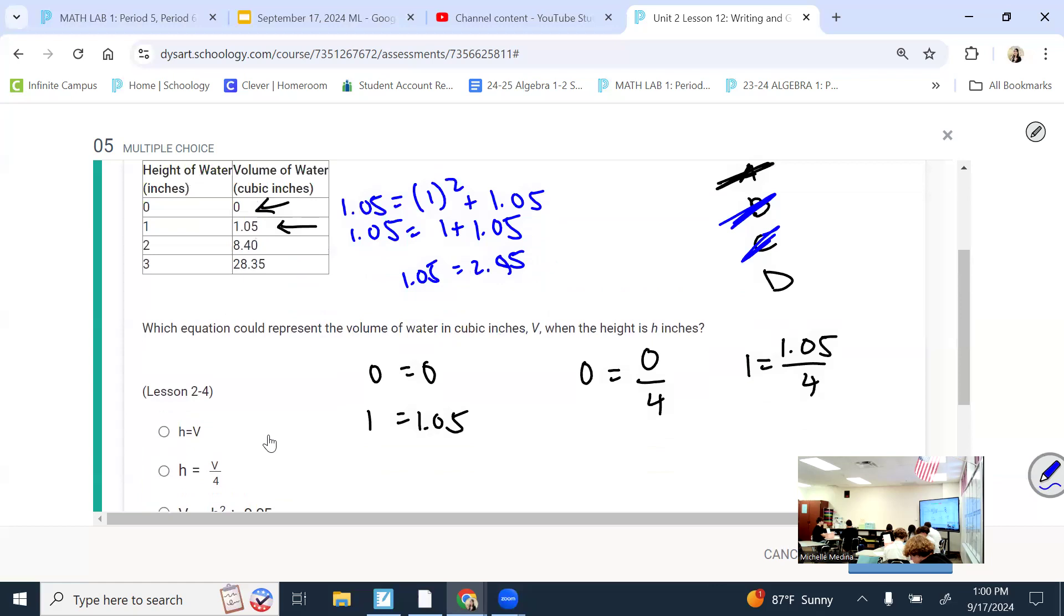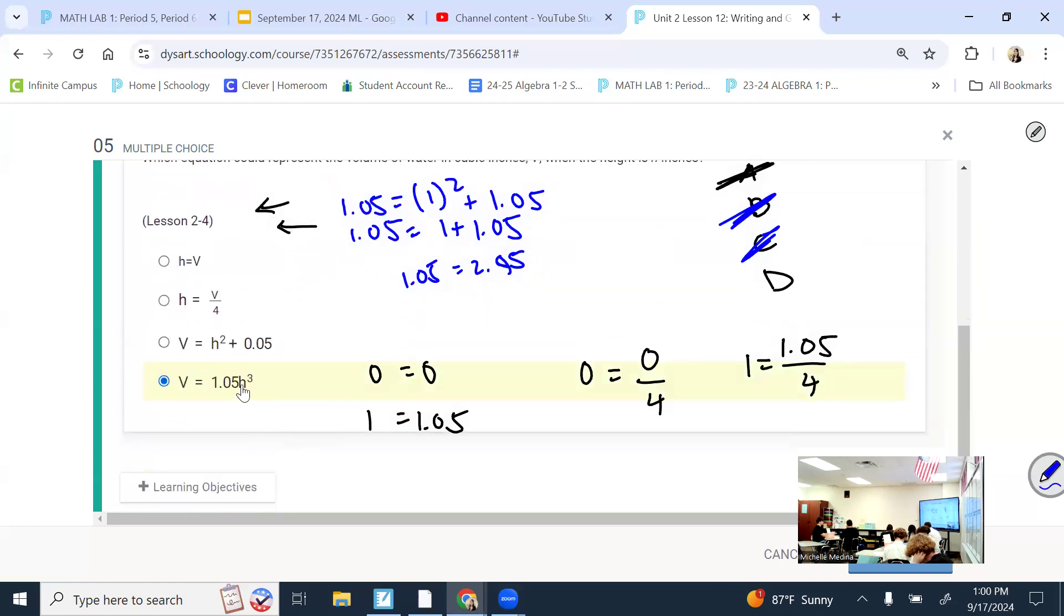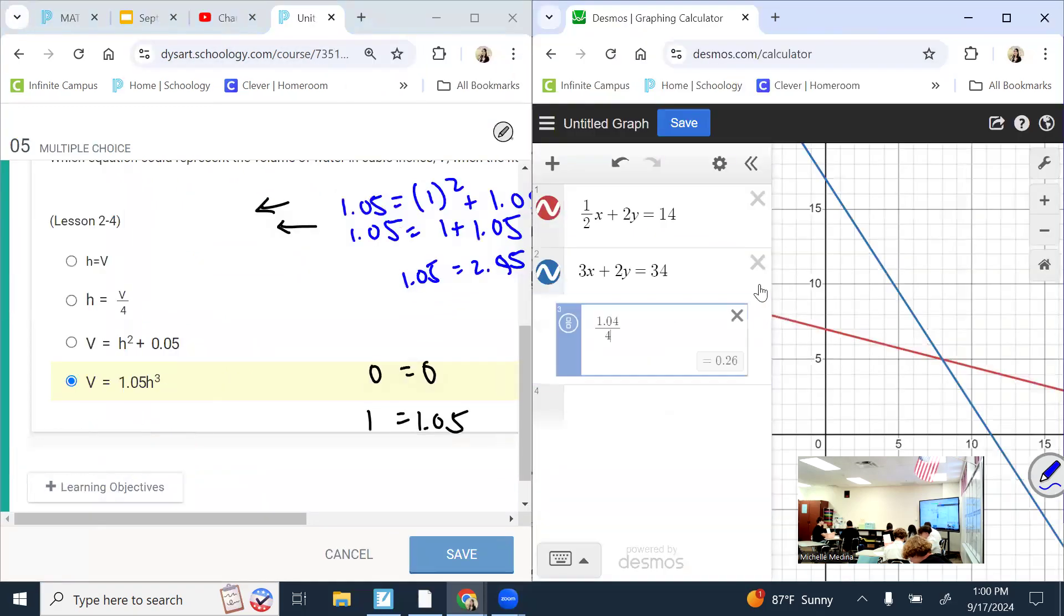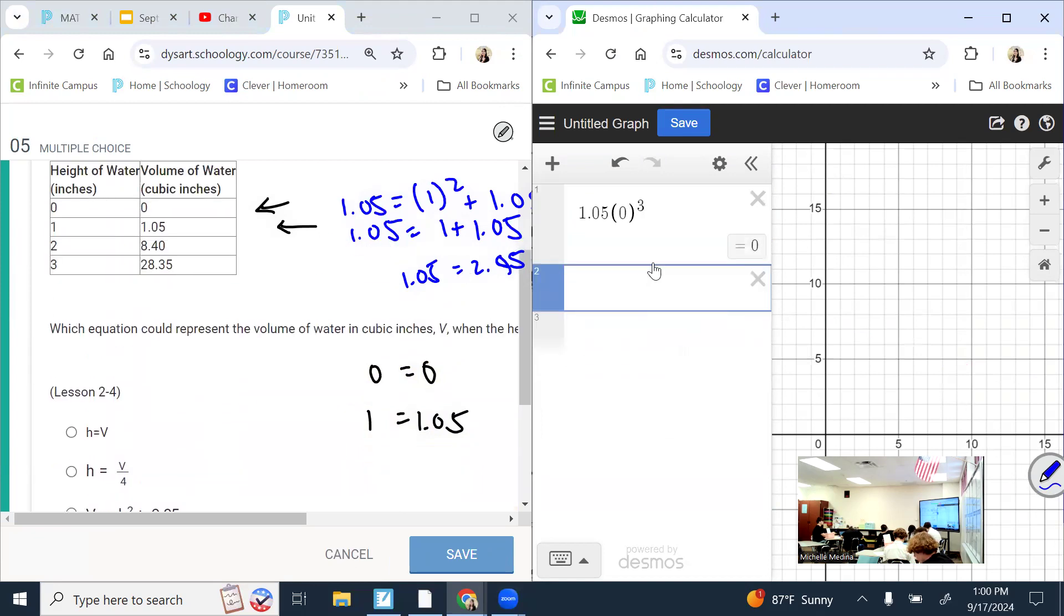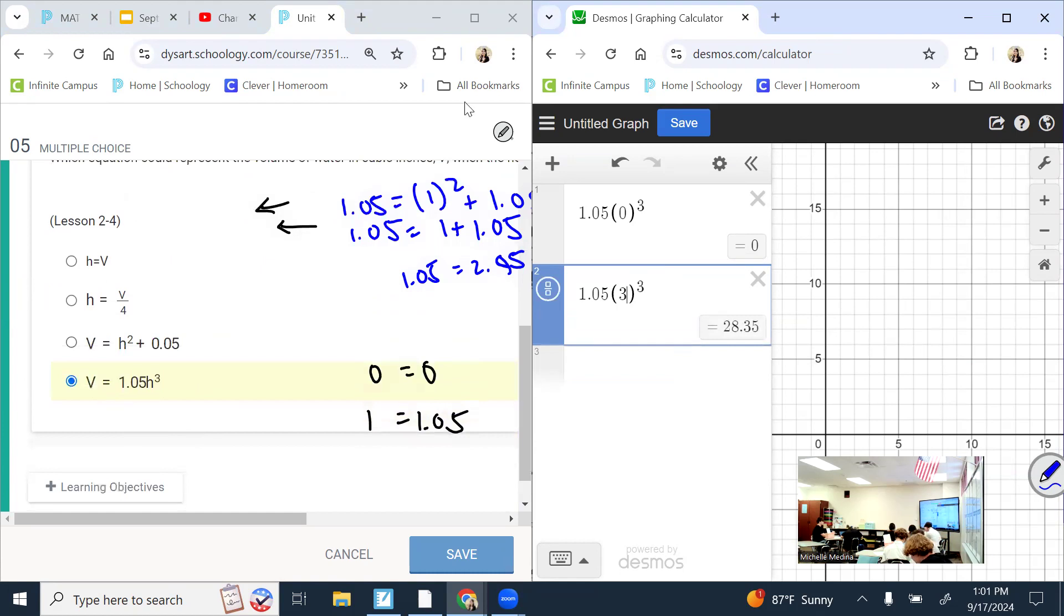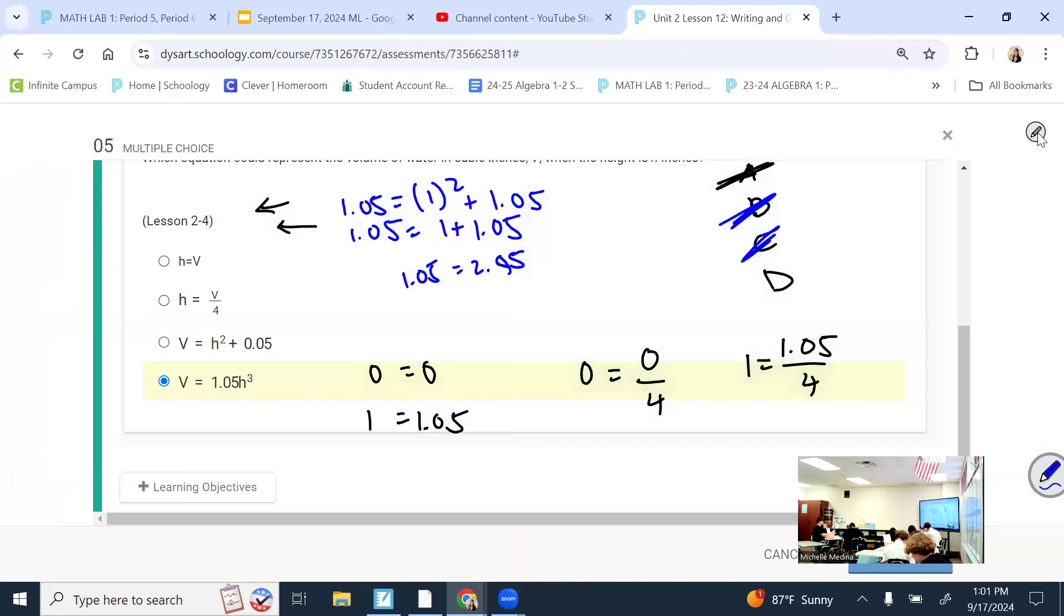But if it does work, then I should be able to plug all of these in to this and get the volume it says. So I'm going to split screen and try that right now. 1.05 times all the h's cubed. That is the same volume. 1.05 times 1 cubed. So far it's matching up. When I change it to a 2, matching up, change it to a 3. So if that's the equation we're going with, it needs to work for each input-output pair. That to me is easier than trying to come up with the equation from scratch.